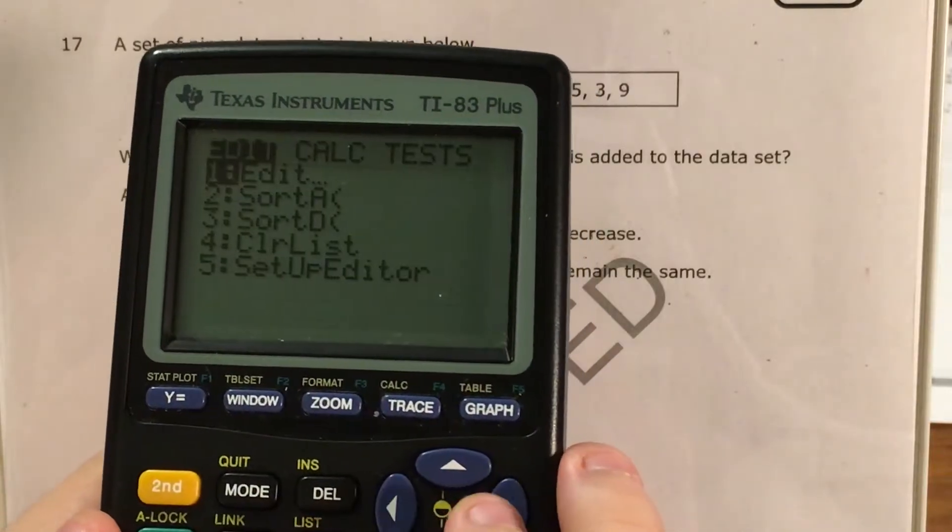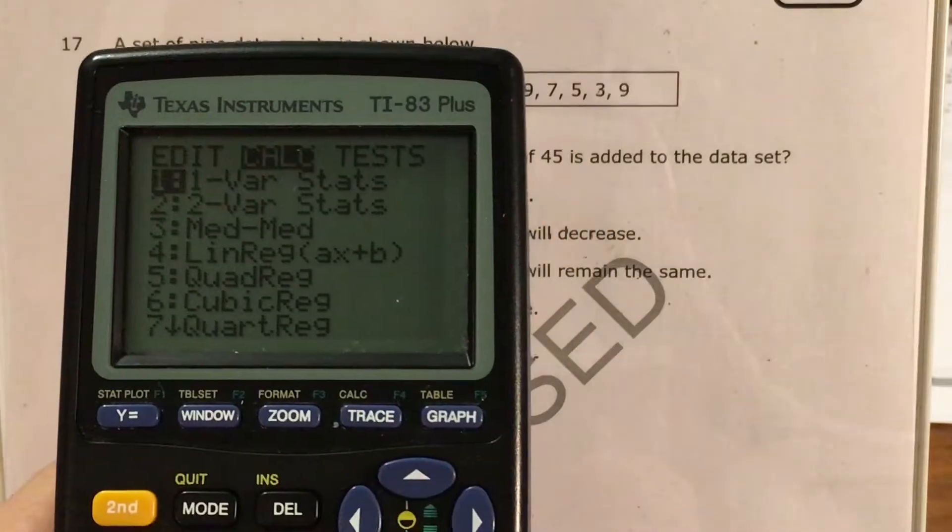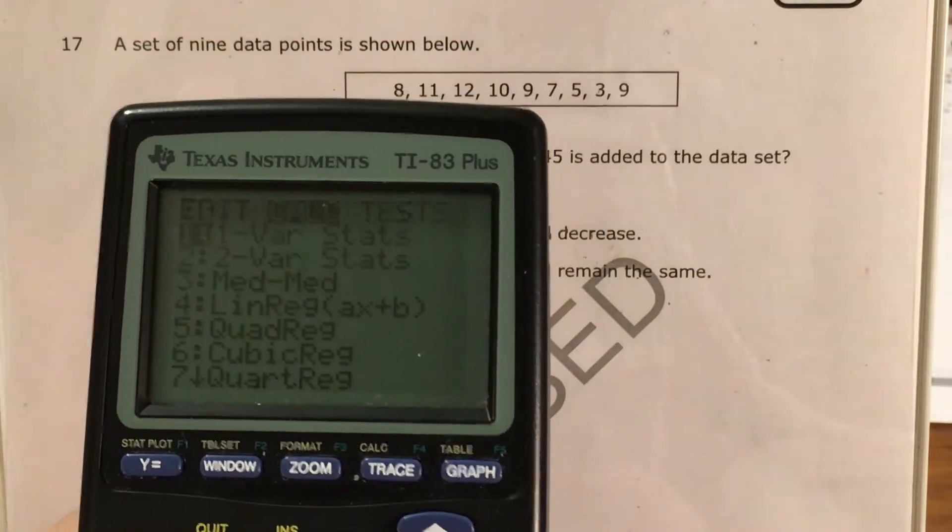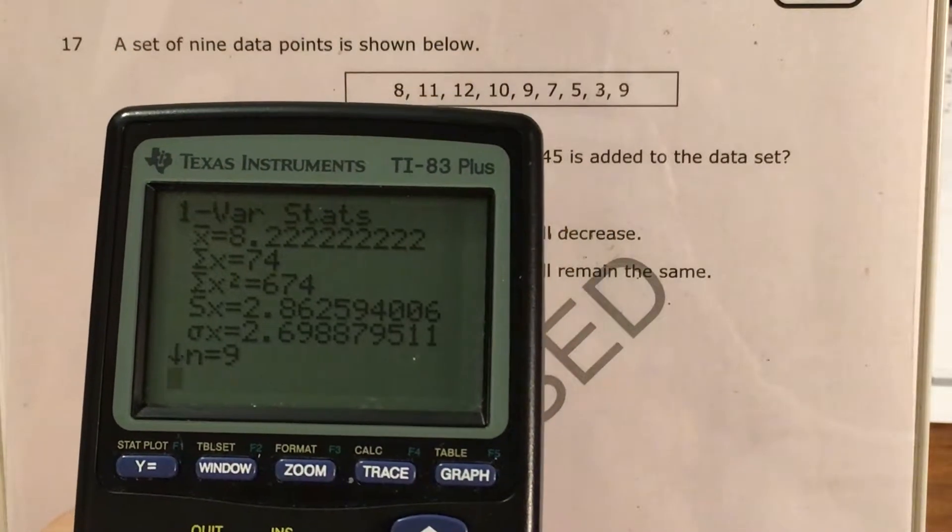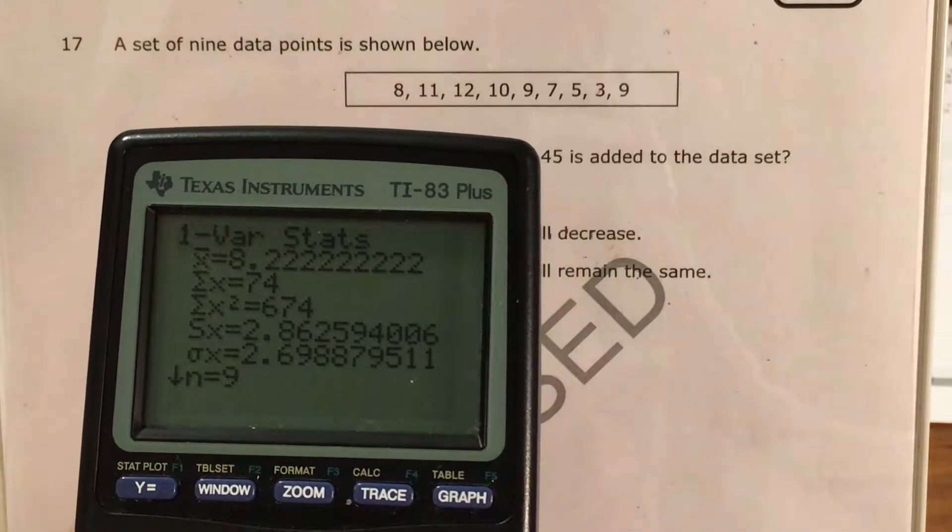And now I press stat and calc, and I see this option, one variable stats or one variable statistics. If I press enter, this gives me a whole bunch of stuff, and I'll go over what a few of these are.